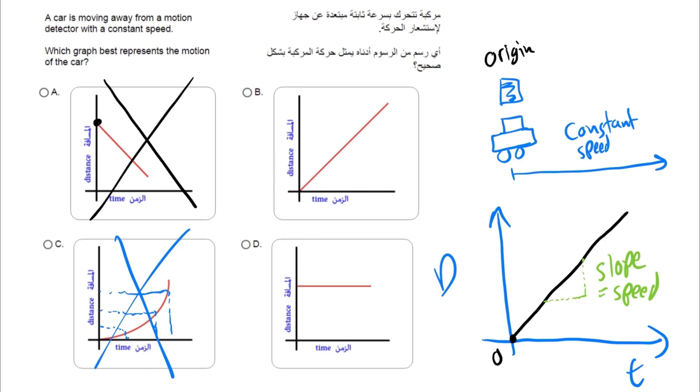How about C? If you take a look at C, as time passes by, the distance is the same. Now if we have the same distance, it means we are still at the origin. We did not move at all. Since the slope of a horizontal line is zero, it means the speed is zero in this graph as well. So this curve does not work either.